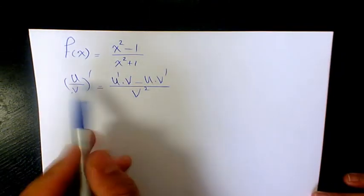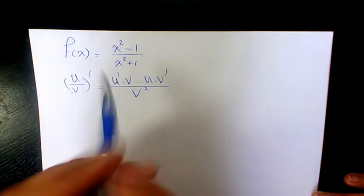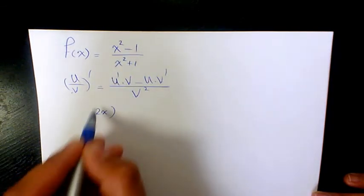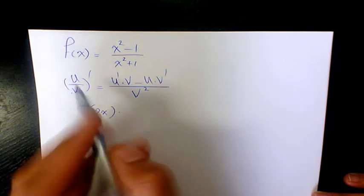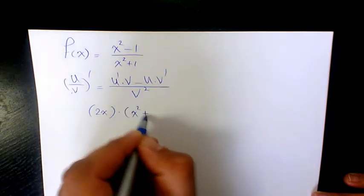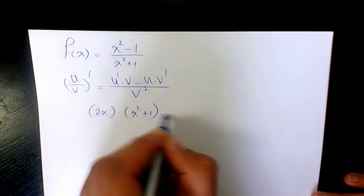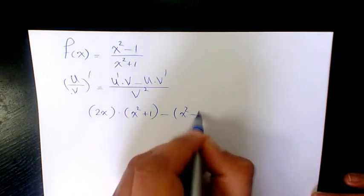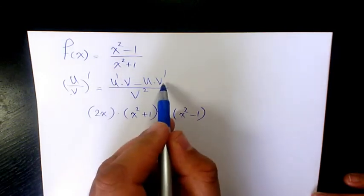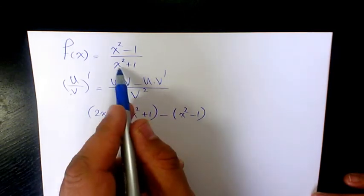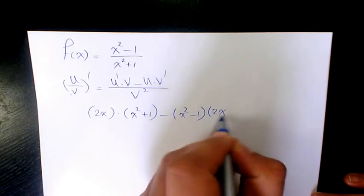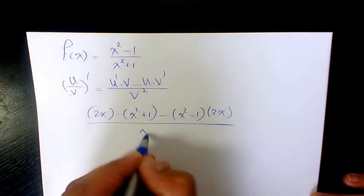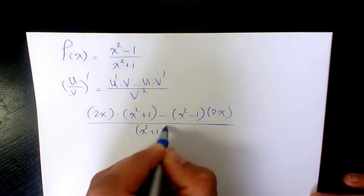So the derivative of u, which is the derivative of x squared minus 1, is going to be 2x times the denominator, which is x squared plus 1, minus the numerator, which is x squared minus 1, times the derivative of the denominator. The derivative of the denominator is going to be 2x, divided by x squared plus 1 to the power of 2.